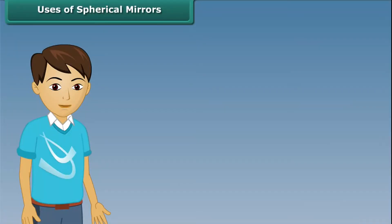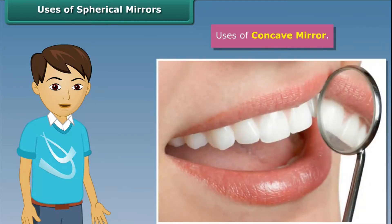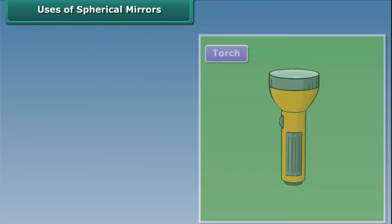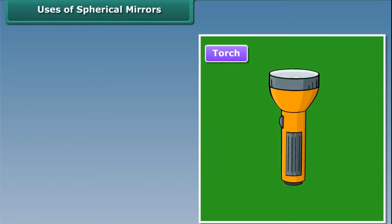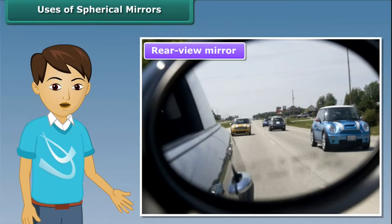Uses of Spherical Mirrors. Concave mirrors are used by dentists to obtain a magnified image of the teeth. They are also used as reflectors in torches and headlights of cars and scooters. Similarly, convex mirrors are used as rear-view mirrors in cars and on motorcycles to help drivers see the traffic behind them.